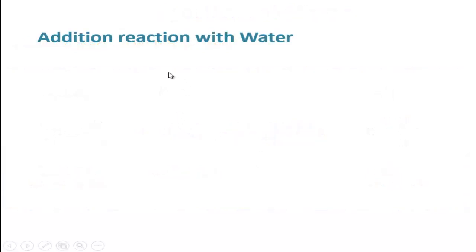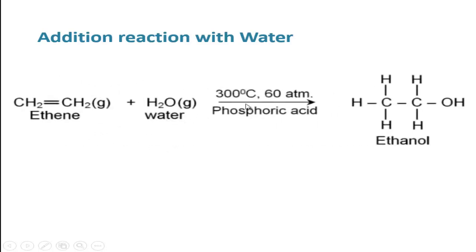Another addition reaction is reaction with water. When alkene reacts with water in the presence of phosphoric acid at 300 degrees centigrade and 60 atmospheric pressure, ethanol is produced. The double bond is broken and one hydrogen atom from water combines with one carbon atom forming CH3, and the OH part combines with the other carbon atom to produce ethanol (CH3CH2OH). From propene there will be produced propanol, from pentene there will be produced pentanol.